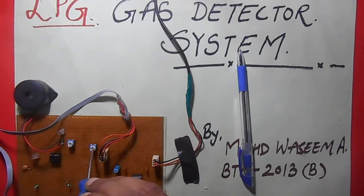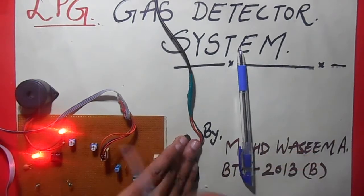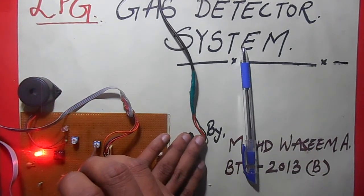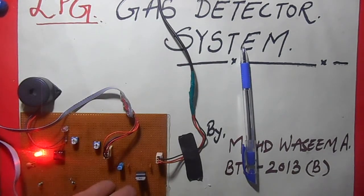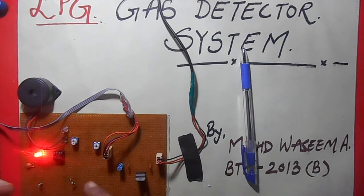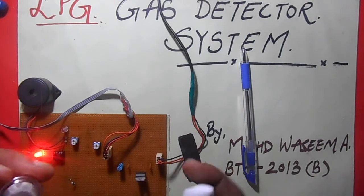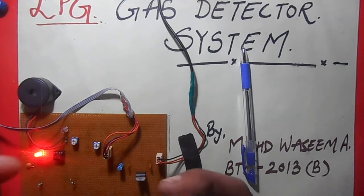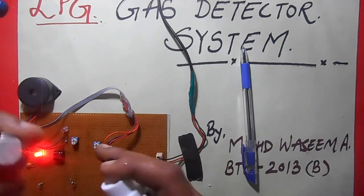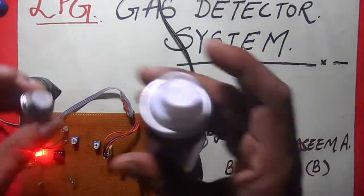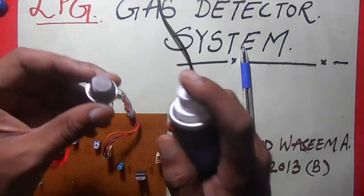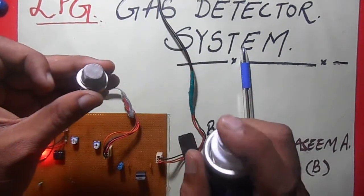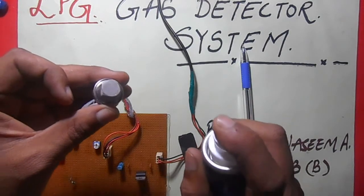Yes, this is the adjusting preset 10k through which you can adjust the sensitivity of the amount of gas at which you want to ring the buzzer. So this is the LPG gas and this is your sensor, and circuit is on the board. So whenever I increase the concentration of this LPG gas, the buzzer is switched on.